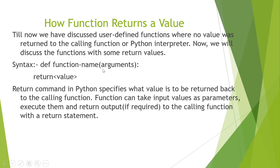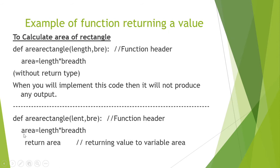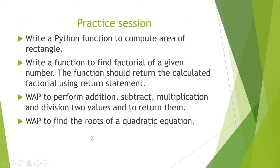A function can return a value using the return statement. When you calculate a value inside the function, return sends it back to the main program, where a variable is needed to collect it. For example, a function with parameters length and breadth calculates area as length times breadth and returns area. A variable in the main program collects that returned value.